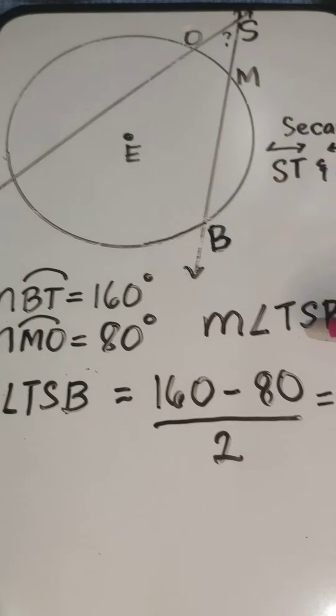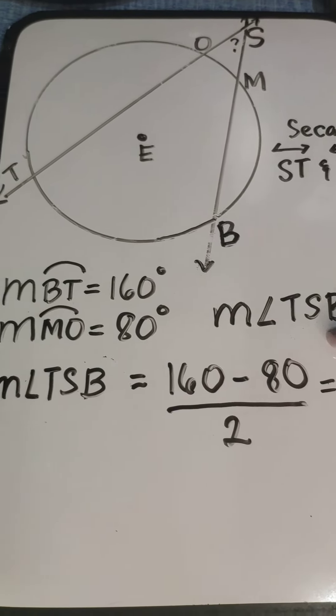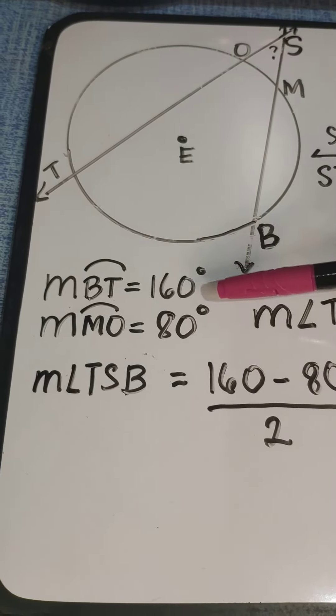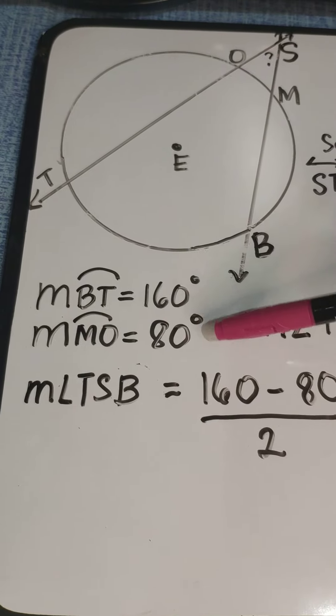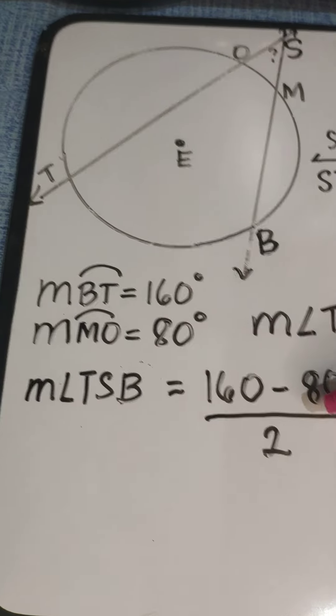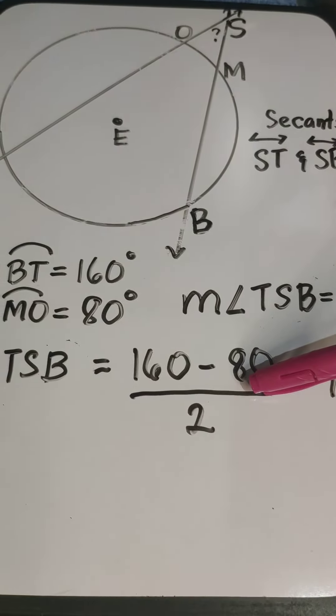Now to find the measure of angle TSB, we are going to get the positive difference of these two intercepted arcs. So 160 minus 80, that will be 80.